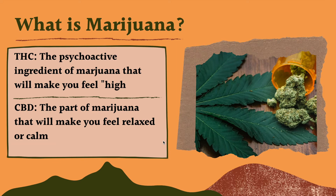In states where marijuana is legal, people will actually extract the THC or CBD and isolate it. A lot of people will vape or smoke it in these different forms — just THC or just CBD. Specifically for CBD, people use it to help them sleep or to calm down anxiety because it gives you that relaxed feeling.